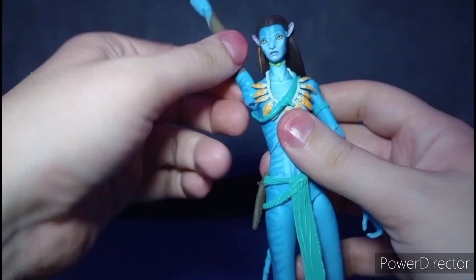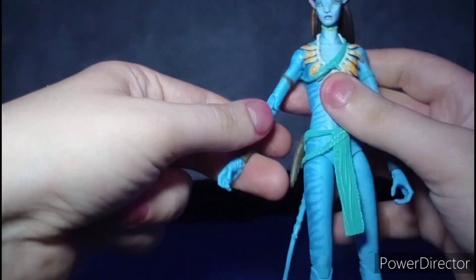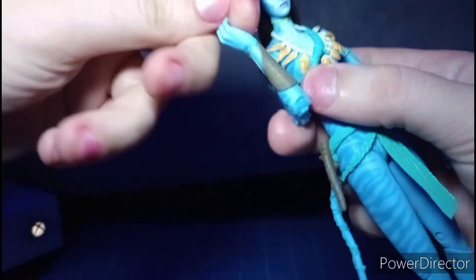Arms do go in and out, all the way around 360. We have a butterfly joint right there, bicep swivel right there, double jointed elbows, wrist hinge, and swivel.